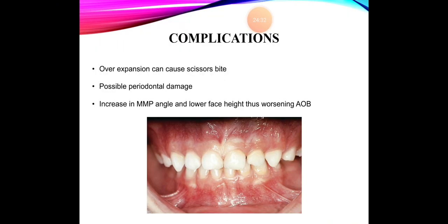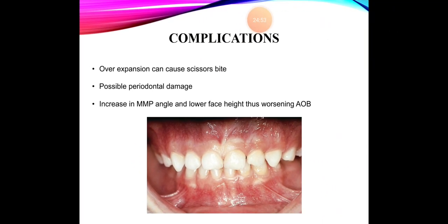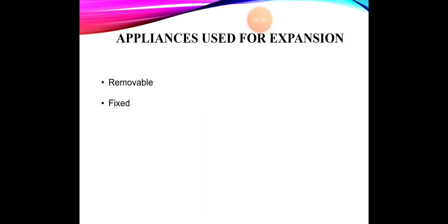Certain complications can occur with surgically assisted rapid maxillary expansion: over-expansion from the jack screw device can cause a scissors bite — bilateral buccal crossbite as seen in this patient — and possible periodontal damage. If we over-expand, there are chances of palatal cuspal hang of the molars, which may increase the maxillomandibular plane angle and lower facial height, worsening any anterior open bite tendency. These complications include scissors bite, periodontal damage, increased lower facial height, and worsening of open bite.